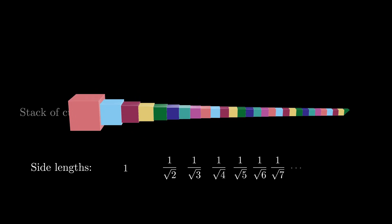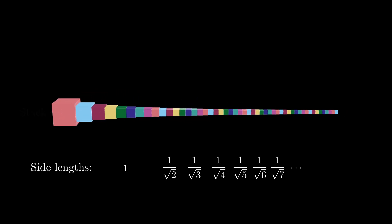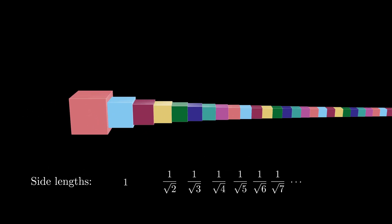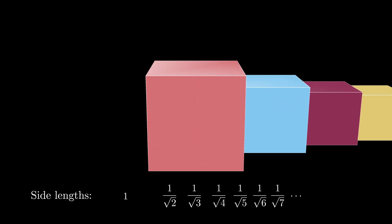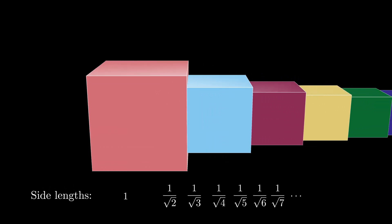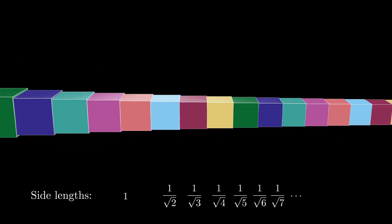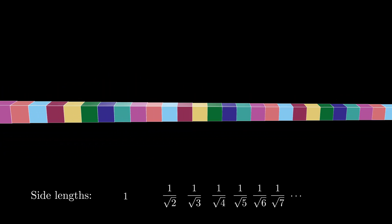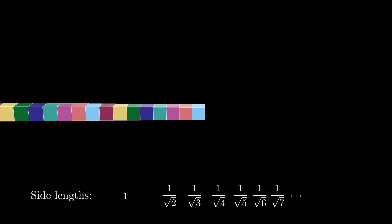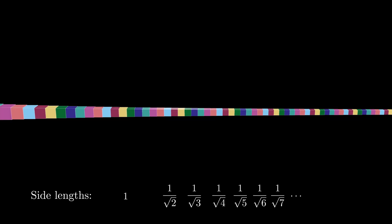Let's take a look at what this stack looks like if we keep going. As we zoom in, we'll notice that at first the cubes actually visibly look like they're getting smaller, but as we get further out in the stack, the difference between 1 divided by the square root of i and 1 divided by the square root of i plus 1 is harder to see.